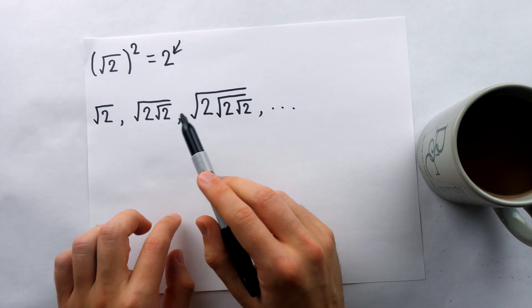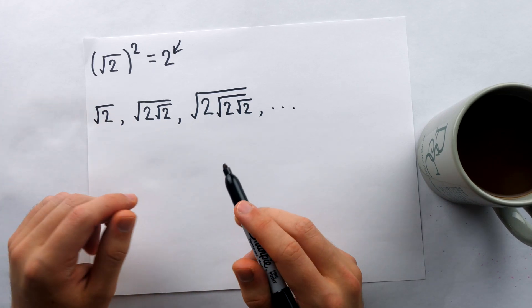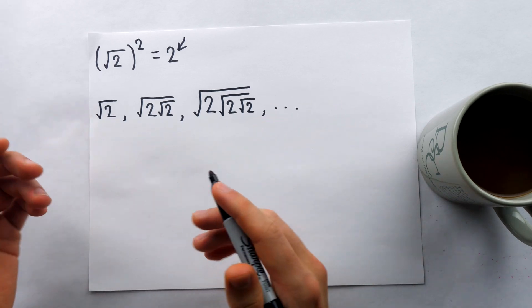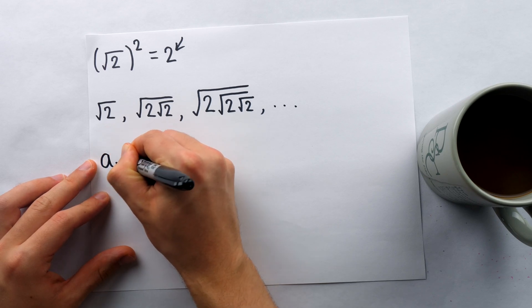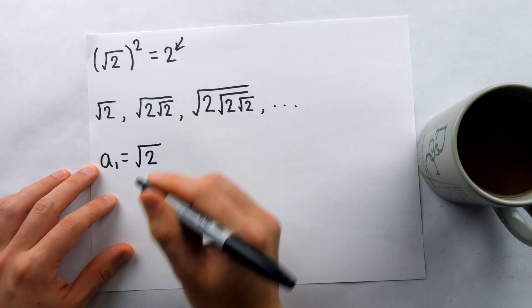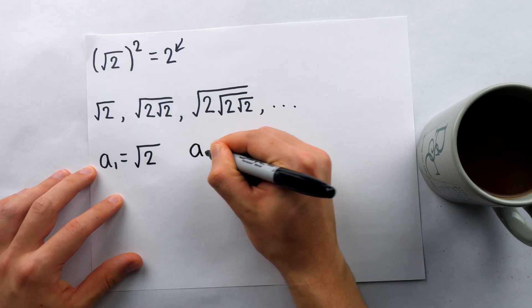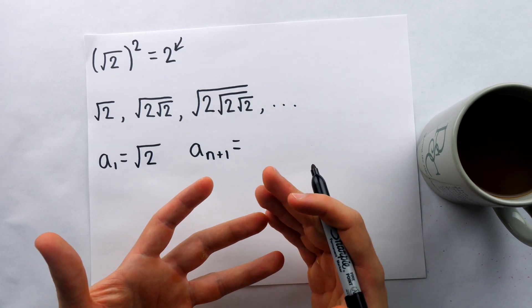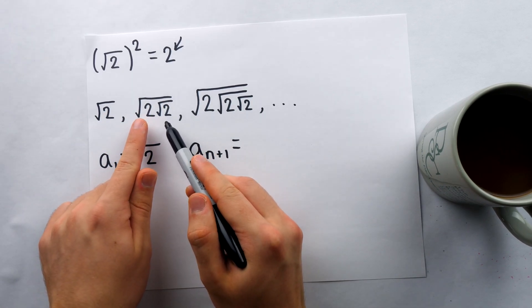If you want a more formal way of describing this cute square root sequence that doesn't rely on just showing you the pattern, we could use a recursive definition. That means we'll define each term of the sequence based on the preceding term. This will require us to specify exactly what the first term is. So a₁, which is the first term of our sequence — we know that's just the square root of 2, a very infamous irrational number. And then knowing what the first term is, from there we can get the rest of the terms, because any term aₙ₊₁ is going to be based on the previous term aₙ, just like a₂ is based on a₁, a₃ is based on a₂, and so on.